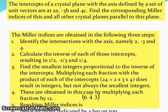Multiplying each fraction with the product of each of the intercepts, 24 equals 2 times 3 times 4, does result in integers but not always the smallest integers. These are obtained in this case by multiplying each fraction by 12, giving 6, 4, 3. Resulting Miller indices with negative index indicated by a bar on top.